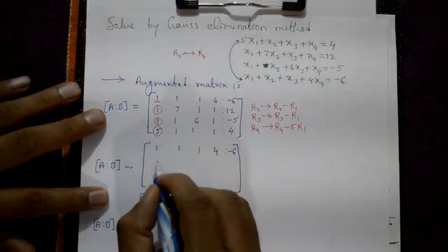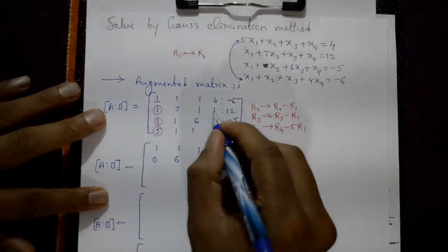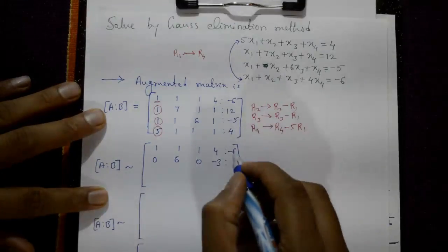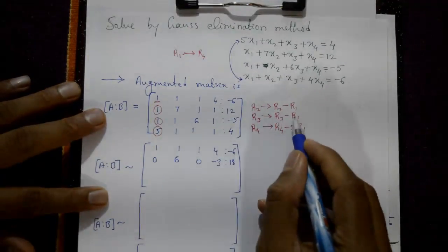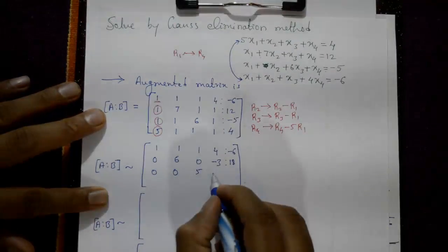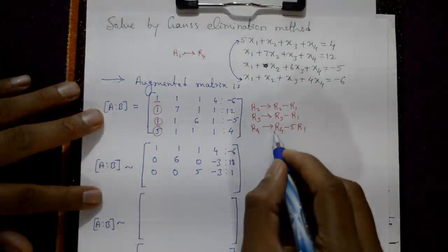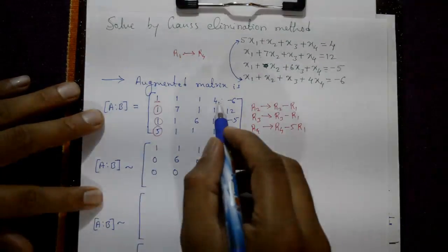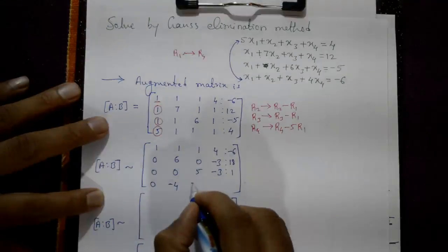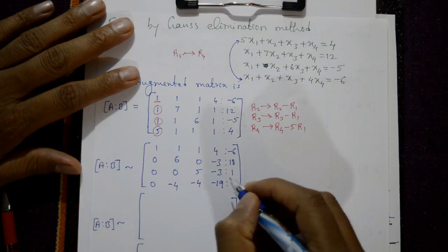The first row remains unchanged: [1, 1, 1, 4 | -6]. Second row R2 - R1 gives [0, 6, 0, -3 | 18]. Third row R3 - R1 gives [0, 0, 5, -3 | 1]. Fourth row R4 - 5×R1 gives [0, -4, -4, -19 | 34].